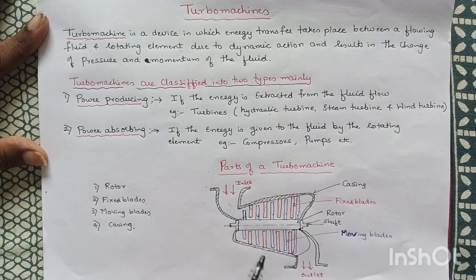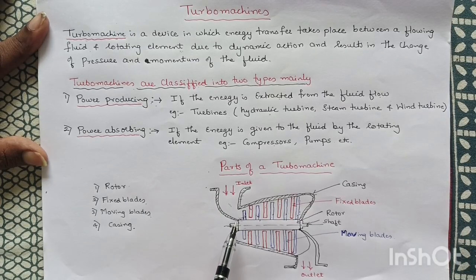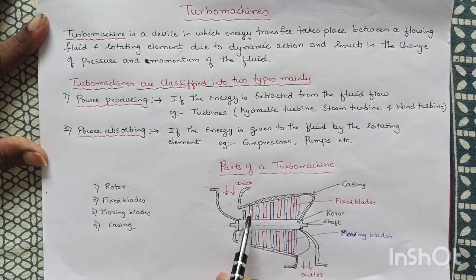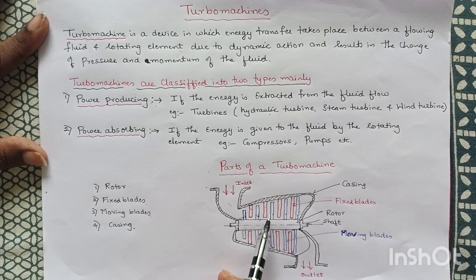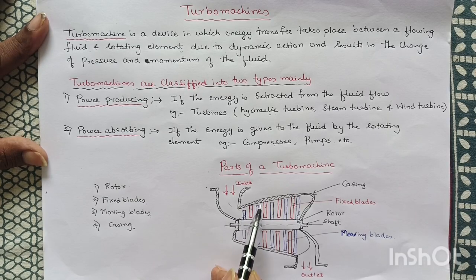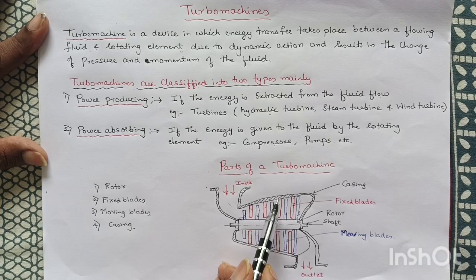This is the inlet of the turbine and this is the outlet of the turbine. Now we will study the functions of the fixed blades and the casing. The fixed blades are also called Stationary Blades. Their function, along with the casing, is to guide the fluid flowing through the Turbomachine in a particular direction. The casing also prevents splashing of the fluid and avoids fluid flowing outside.